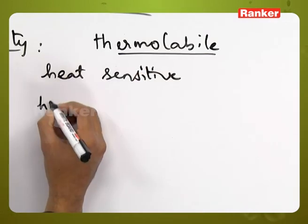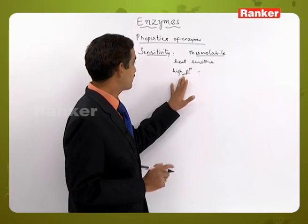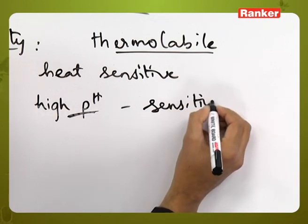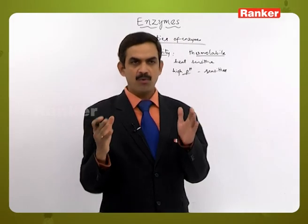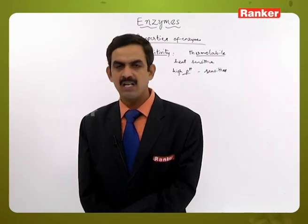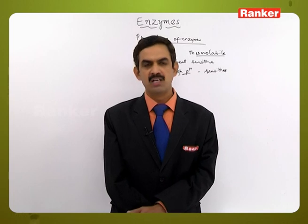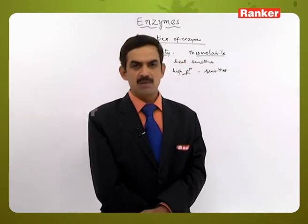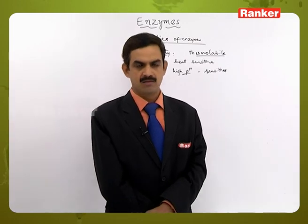Enzymes are also sensitive to pH. Depending on the type of enzyme, some are active at low pH and some at high pH, but the majority of enzymes are active at neutral pH, around a value of 7.